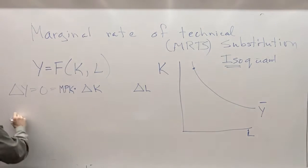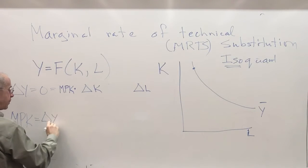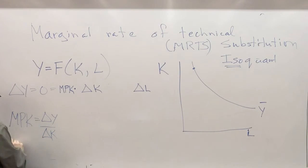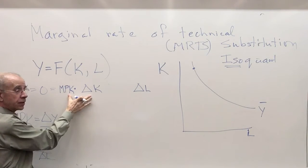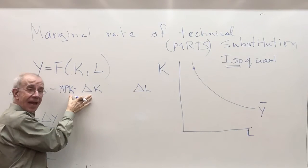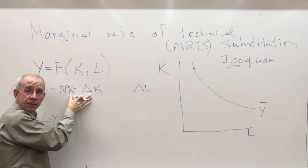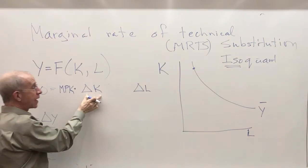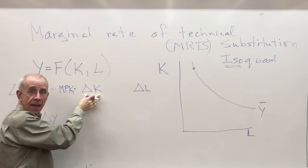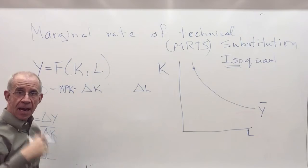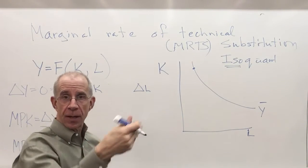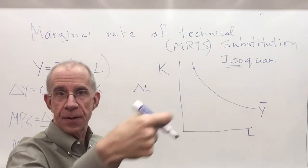Okay, so the marginal productivity of capital, as we've talked about, is how much output changes if you change a unit of capital. The marginal productivity of labor, change in output for a change in labor. So this part right here tells you the extra output I get if I change the use of capital by one unit, and that's how much extra output I get for every single unit of capital that increase.